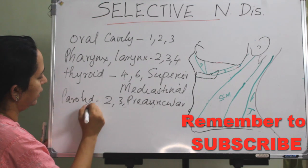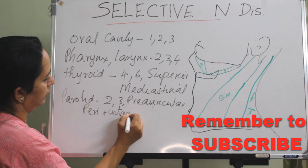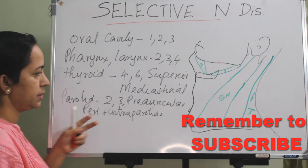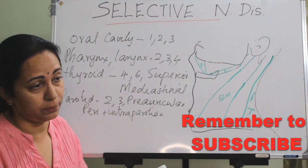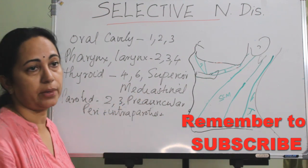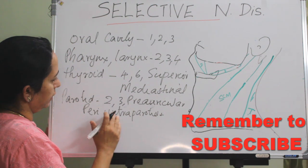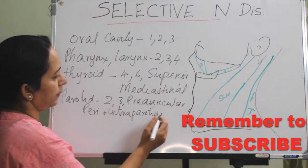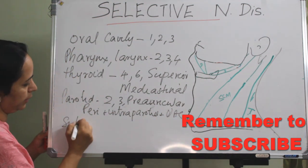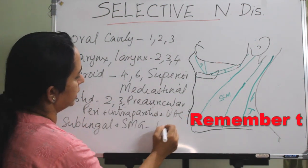For parotid, peri- and intra-parotid nodes are also involved, along with the upper accessory chain. The recent modification of naming includes pre-auricular nodes labeled as levels 8, 9, and 10. For sublingual and submandibular salivary gland areas, the nodal status is levels 1, 2, and 3.